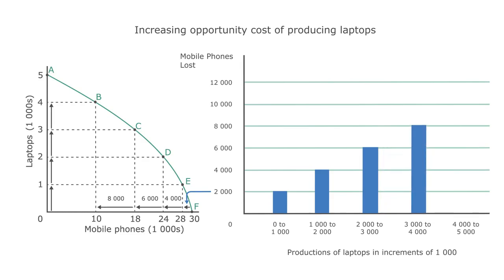You can see that the initial opportunity cost of producing 1,000 laptops was relatively small — only 2,000 mobile phones. But the final opportunity cost of raising production of laptops from 4,000 to 5,000 is 10,000 mobile phones. By the time the production of laptops reaches 5,000, there are not enough resources to produce any mobile phones.